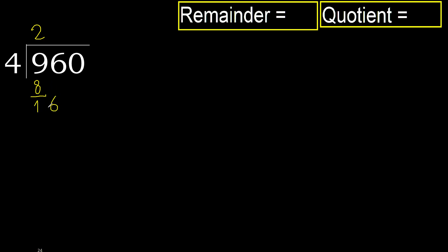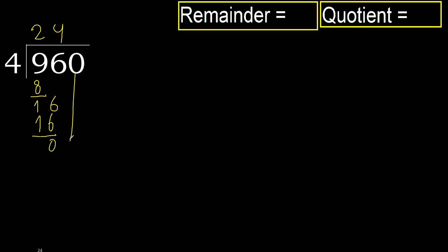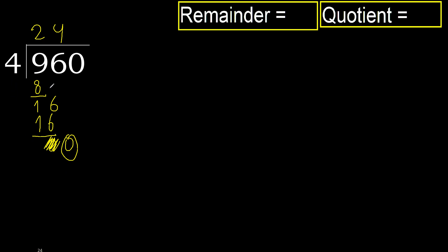Next: bring down the next digit to get 16. 4 multiplied by 4 is 16, which is not greater. Subtract: 16 minus 16 equals 0. Bring down the next digit — eliminate the 0 on this side. 0 is less, therefore next.